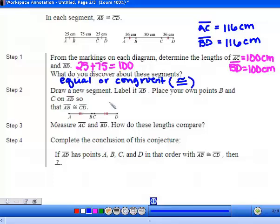They've drawn one for you here, so we have AD and we want AB congruent to CD. Now they want us to measure AC and BD. If you have a ruler you can measure also. Here's my ruler.